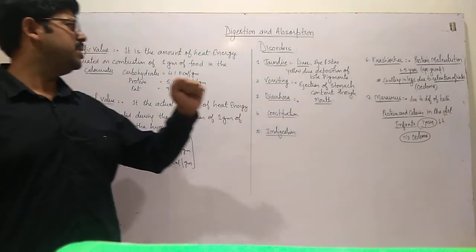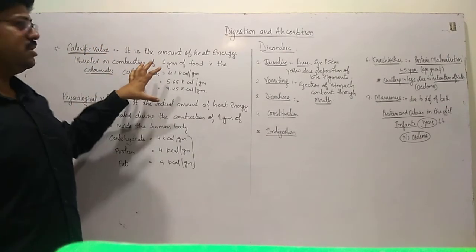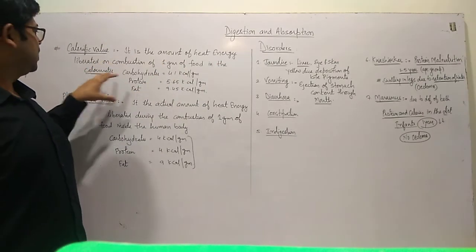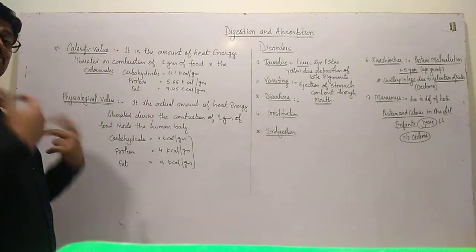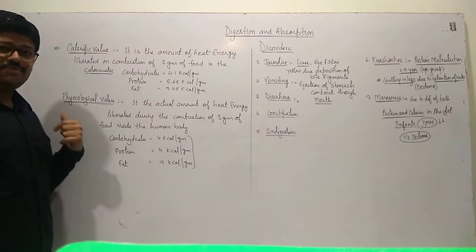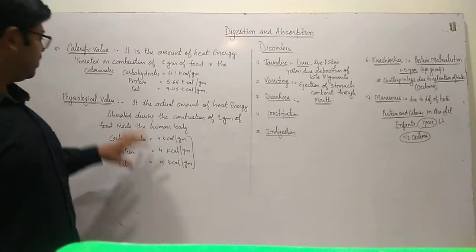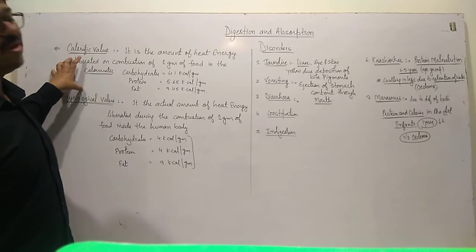Calorific Value is the amount of heat energy liberated on combustion of 1 gram of food. The Physiological Value is the actual heat released in the human body, which is always less than the Calorific Value.